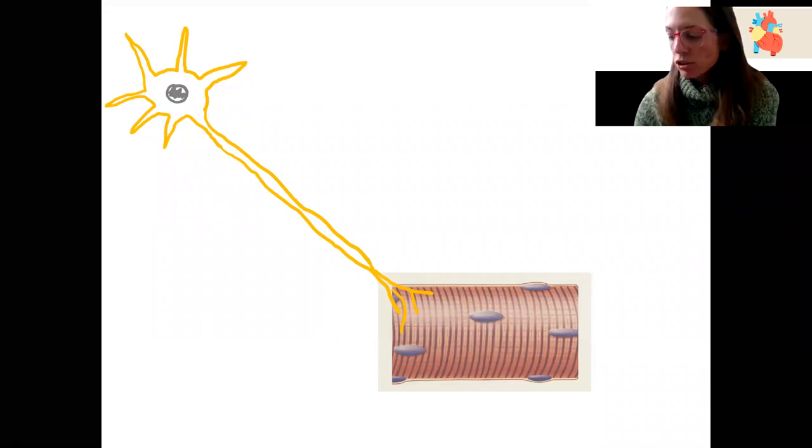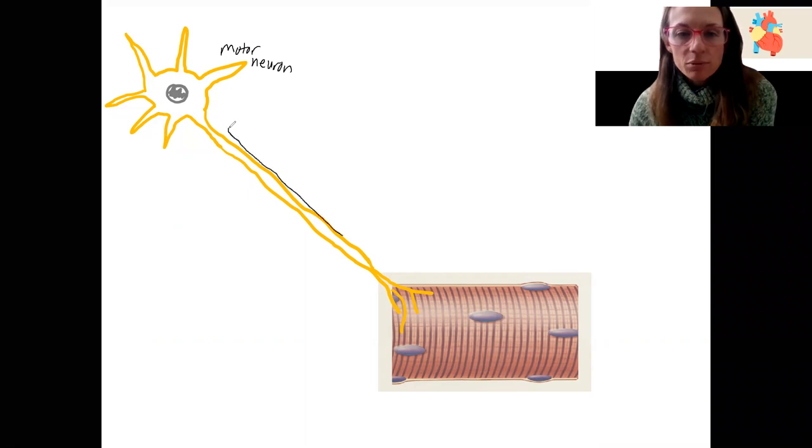We just reviewed an action potential that occurs in neurons. So this, for example, would be a motor neuron which is able to initiate one of these action potentials. That action potential is carried down the axon, of course, after being initiated at that axon hillock.